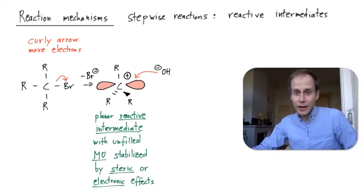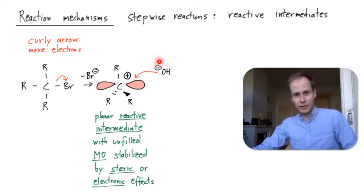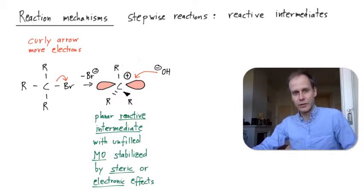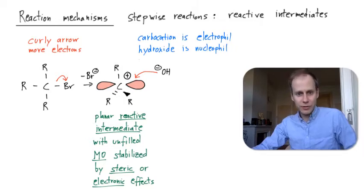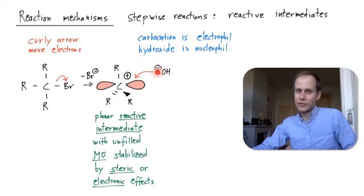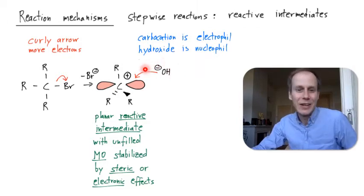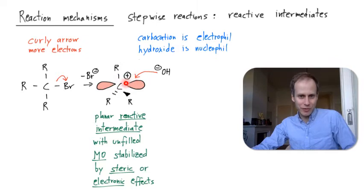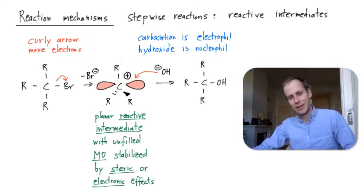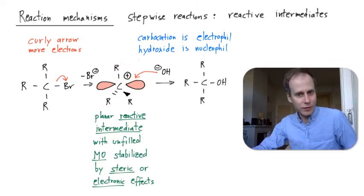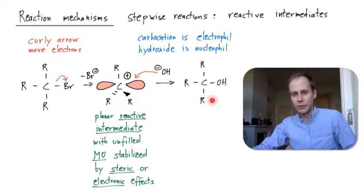A nucleophile like hydroxide could attack this carbocation to form a product. This carbocation is an electrophile because it takes electrons from the nucleophile, and the hydroxide is a nucleophile interested in the positive charge of the electrophile — the carbocation. If the reaction proceeds, it produces an alcohol in this example.